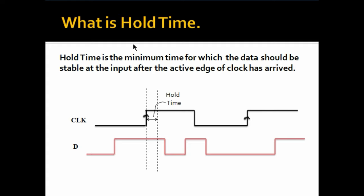So, what is hold time? Hold time is basically the minimum time for which data should be stable at the input after the active edge of clock has arrived. Just remember that I have taken ideal clock and ideal data here, but in reality it won't be like that. The transition won't be such smooth — the clock and data will take some time to transition from 0 to 1 or from 1 to 0. So, this is the ideal case.